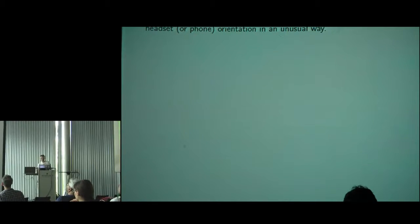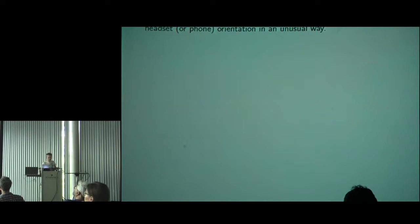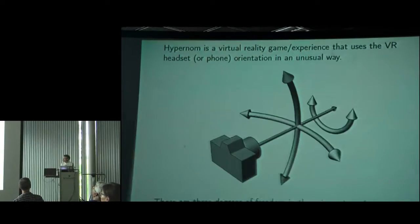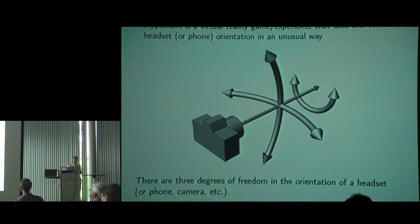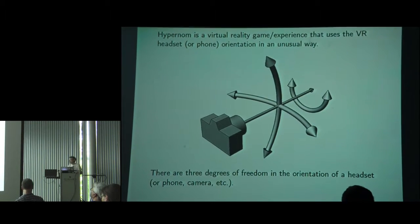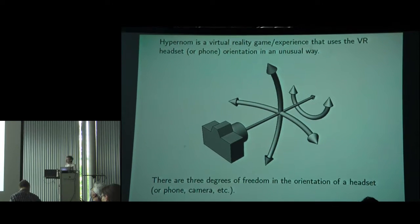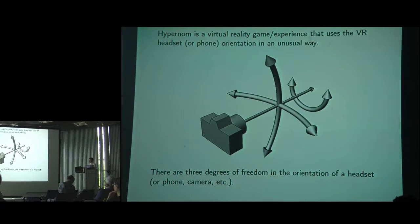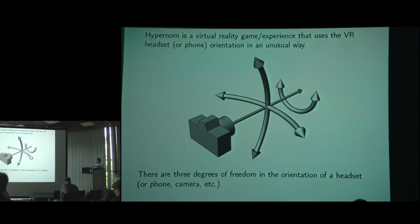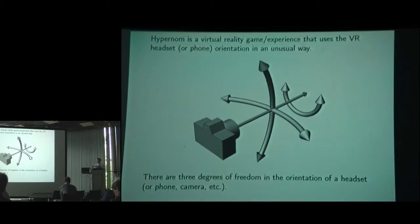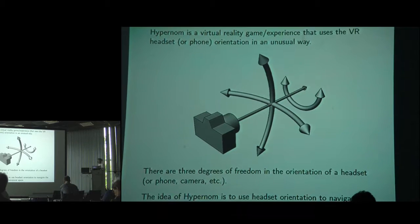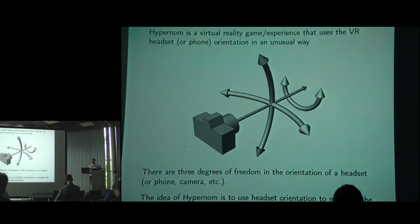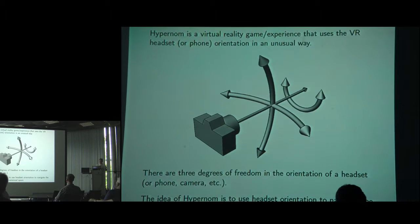This is a virtual reality experience that uses a headset or phone — in this case an iPad — in an unusual way. If you haven't thought about the space of orientations of an object before, it's a three-dimensional space. There are three degrees of freedom: you can yaw left or right, pitch up and down, and roll. The idea is to use the orientation of the device to navigate the player through a three-dimensional space.